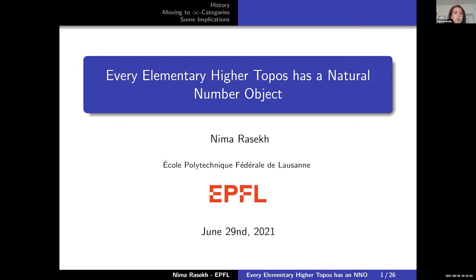This talk is going to be about elementary higher toposes having a natural number object. Thank you to the organizers for giving me a chance to speak. This is a talk on an ongoing project studying topos-theoretic phenomena in the higher categorical setting. I like this title because unlike many foundations talks, it already tells you specifically what the talk is going to be about: there's an object and it has a certain property.